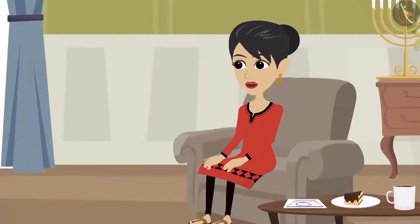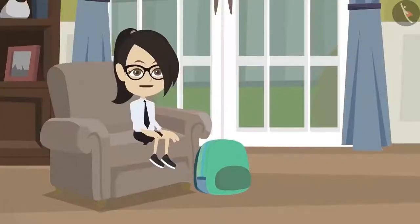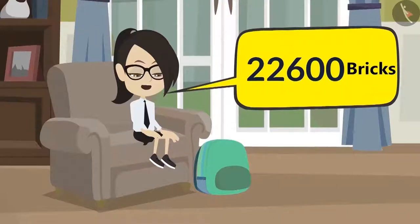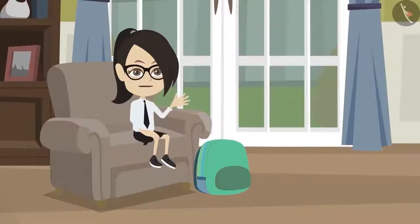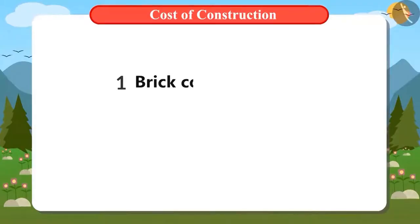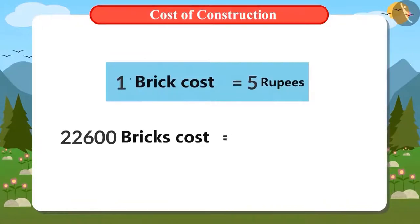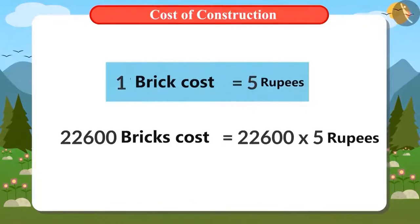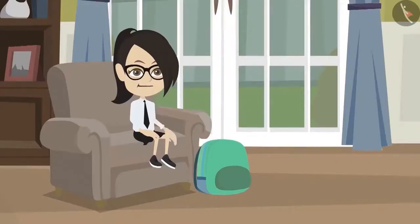Her mother says she will calculate the rest. Now, knowing that a total of 22,600 bricks will be used, let's find how much they would cost. A brick costs 5 rupees. So, to find the value of 22,600 bricks, we will multiply 22,600 by 5.